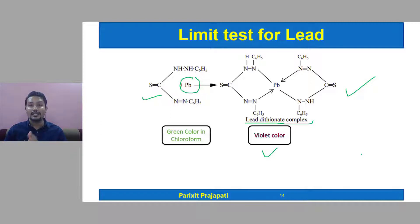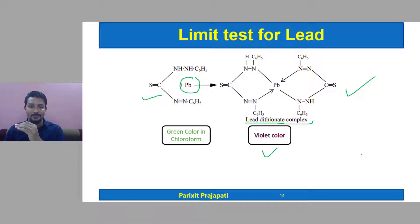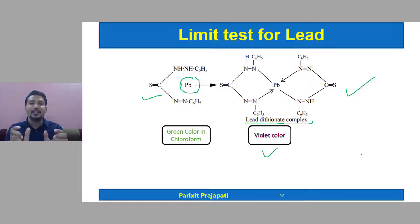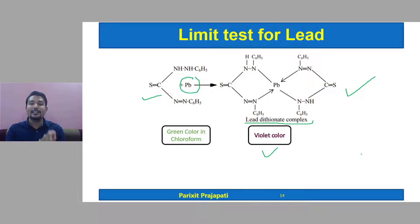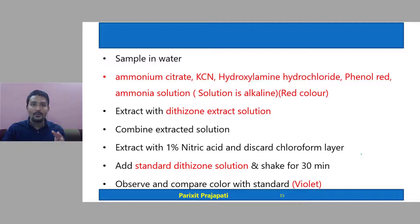The violet color intensity of the sample is compared with a standard in which a known amount of lead is already present. The procedure is performed in the same way for both, and finally both color intensities are compared. The sample should have less color intensity than the standard.